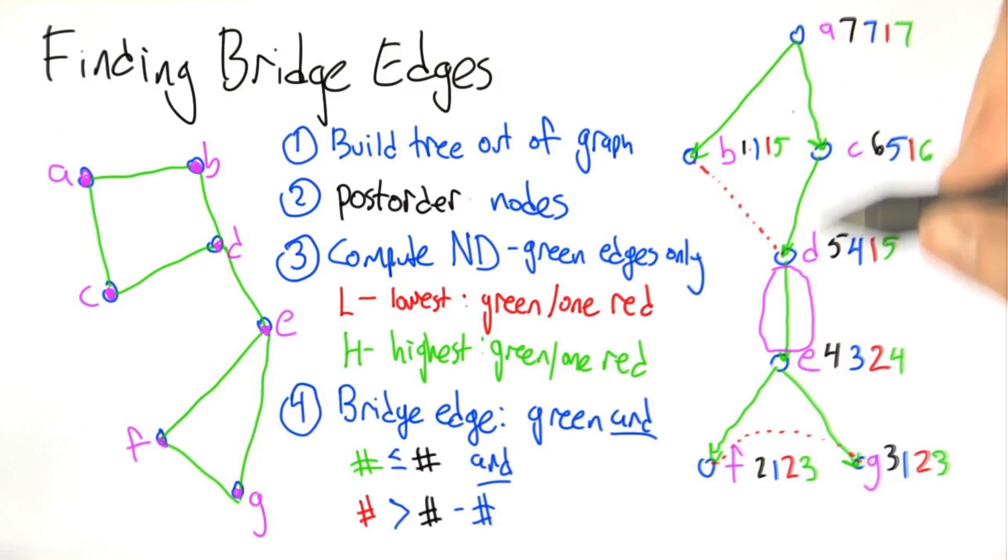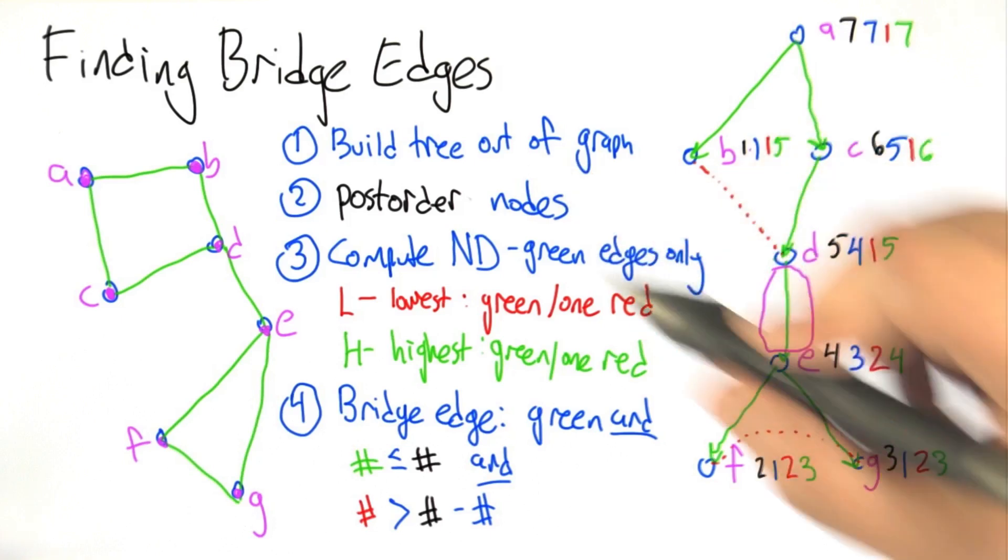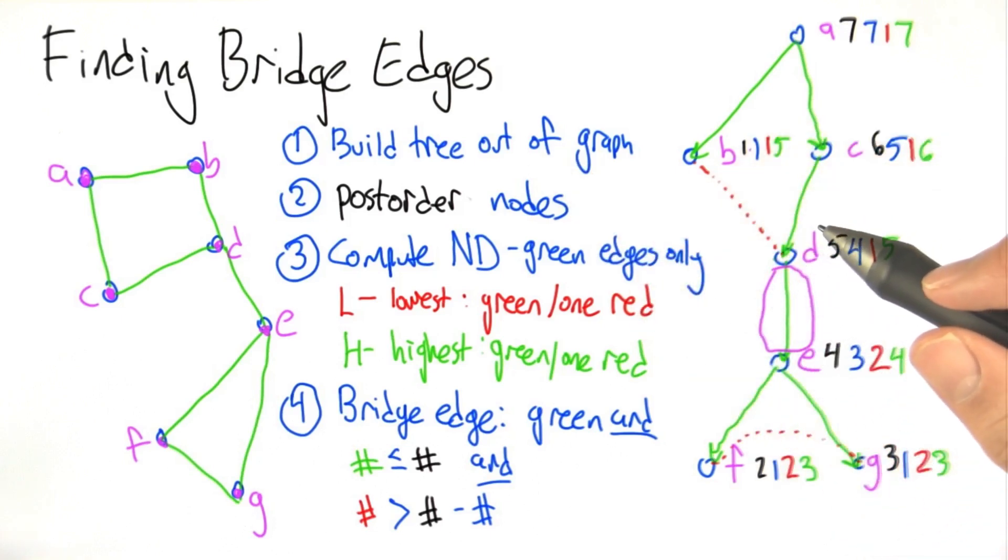Well, that's it. Those are all the edges. So in this example, the one edge that the algorithm finds is exactly the bridge edge. Can we get a handle on why this works? It seems kind of magic at this point.